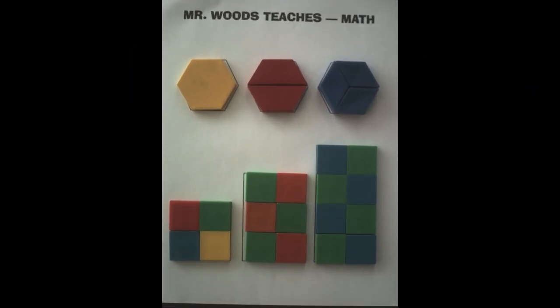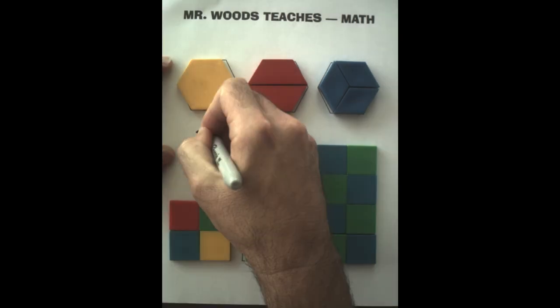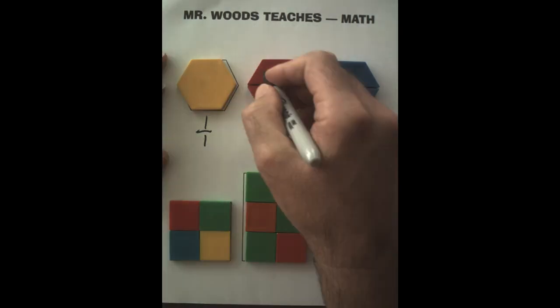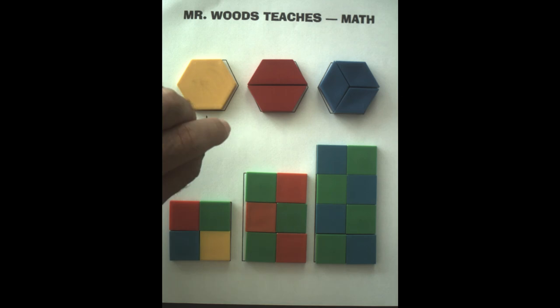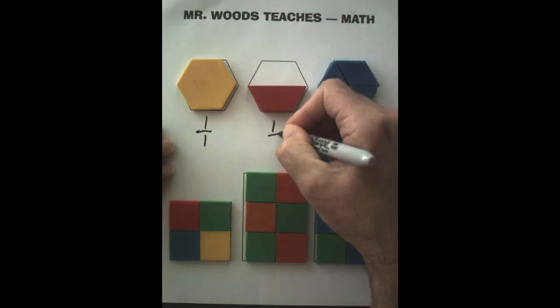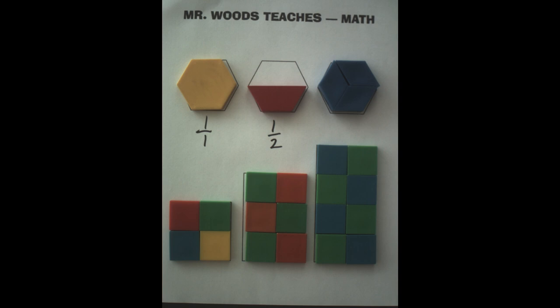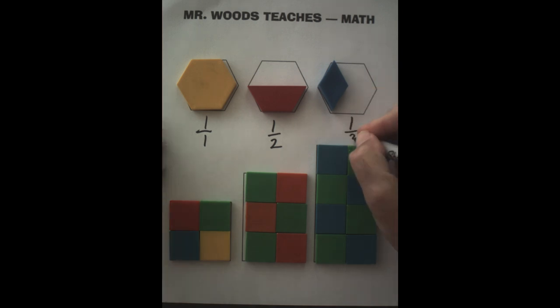Alright friends, we're going to get through this real quickly. If I have one piece there, it's going to be one over one, which is one whole. Two pieces, it's two halves, but if I take one away, I only have one half left. Right here, I have three pieces. If I take two away, I have one third left.